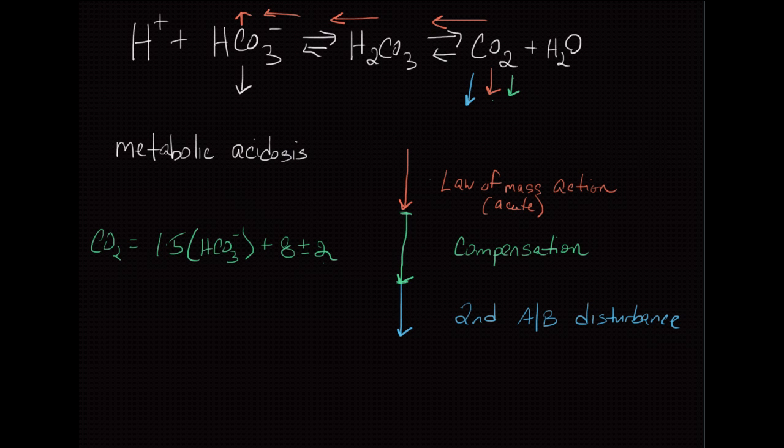The last thing we want to discuss is what happens if the CO2 doesn't drop at all or increases. That's completely incorrect based on the law of mass action. At the minimum, the CO2 has to drop this distance, which is represented in orange, because of the laws of physical chemistry. If the CO2 has actually risen, that means there is another pathologic process driving CO2 up, and we're going to call that again a second acid-base disorder.